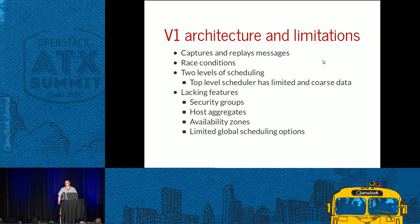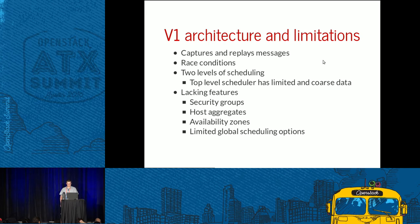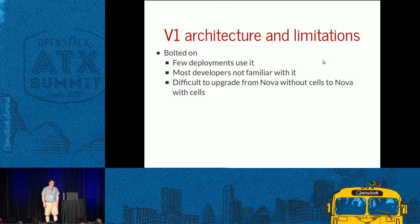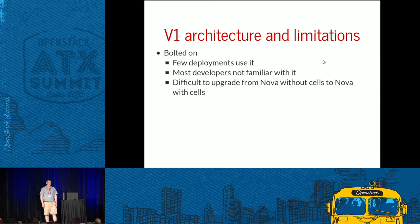V1 is also lacking basic Nova features — security groups, host aggregates, availability zones, and other scheduling options. It's also bolted on, which is probably one of the biggest issues. Few deployments use it; mostly larger deployers with resources to maintain internal patches. A lot of developers aren't familiar with it, which makes it hard to get code reviewed and merged, and means developers adding new features often forget to add cells support. There are a lot of bugs and not many developers who can really work on it.